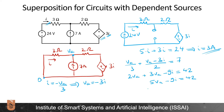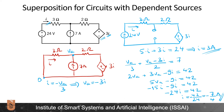Substituting VA equals minus 3i into the equation: minus 15i minus 9i equals 42, giving minus 24i equals 42, so i equals minus 7/4 amperes for the current source input. The total current is 3 plus (minus 7/4), which equals 5/4 amperes.